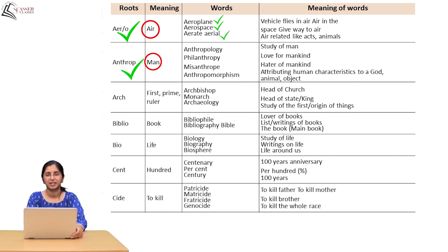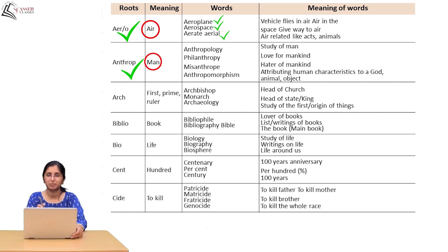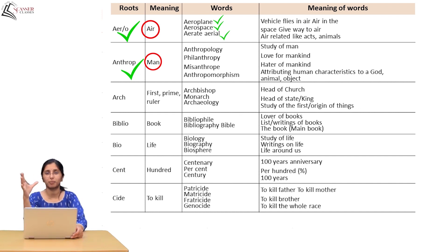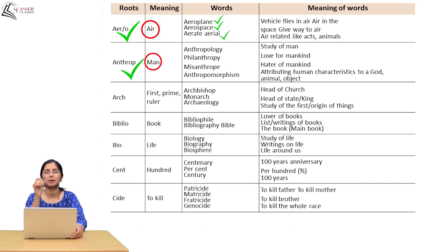Misanthrop means hater of mankind. Anthropomorphism means attributing human characteristics to a god, animal, or object. So root words are clear — if you know a root and add a prefix or suffix, new words are formed, and you can deduce the meaning of those new words yourself if you know the root's meaning.